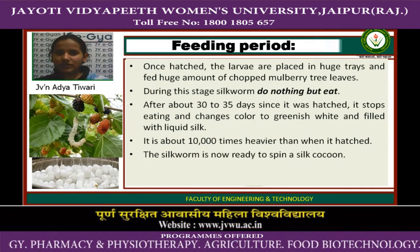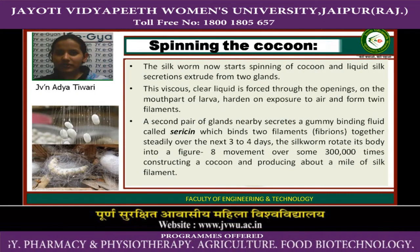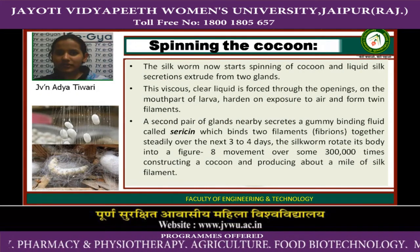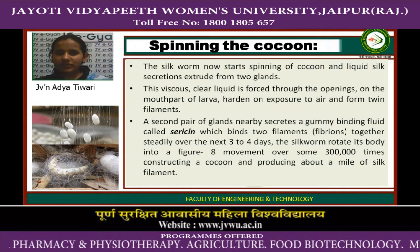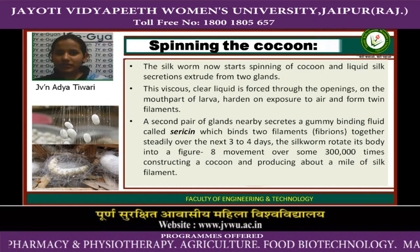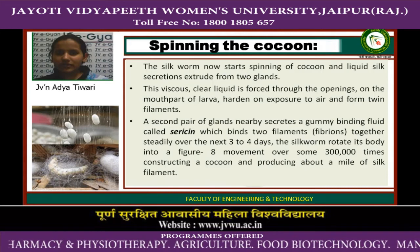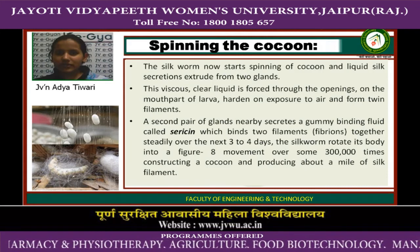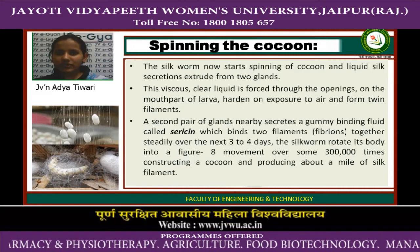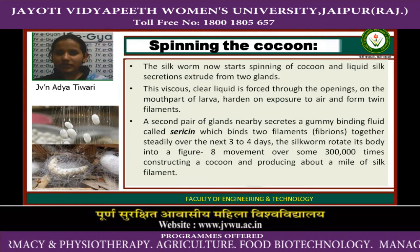Here is the spinning of the cocoon. The silk moth now starts spinning the cocoon. Liquid silk secretion is extruded from two glands and this viscous clear liquid is forced through openings on the mouth part of the larvae, hardening upon exposure to air.